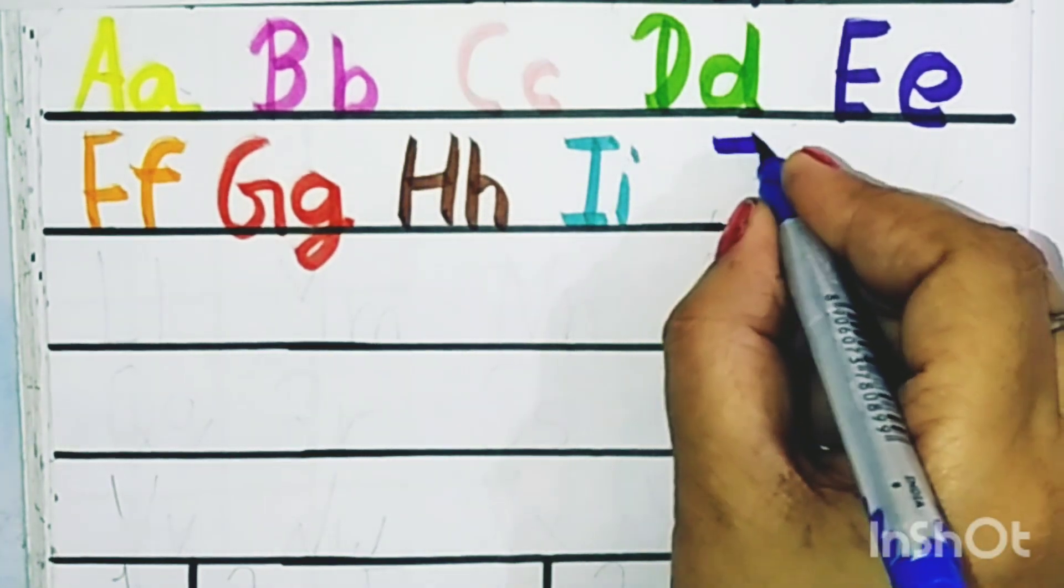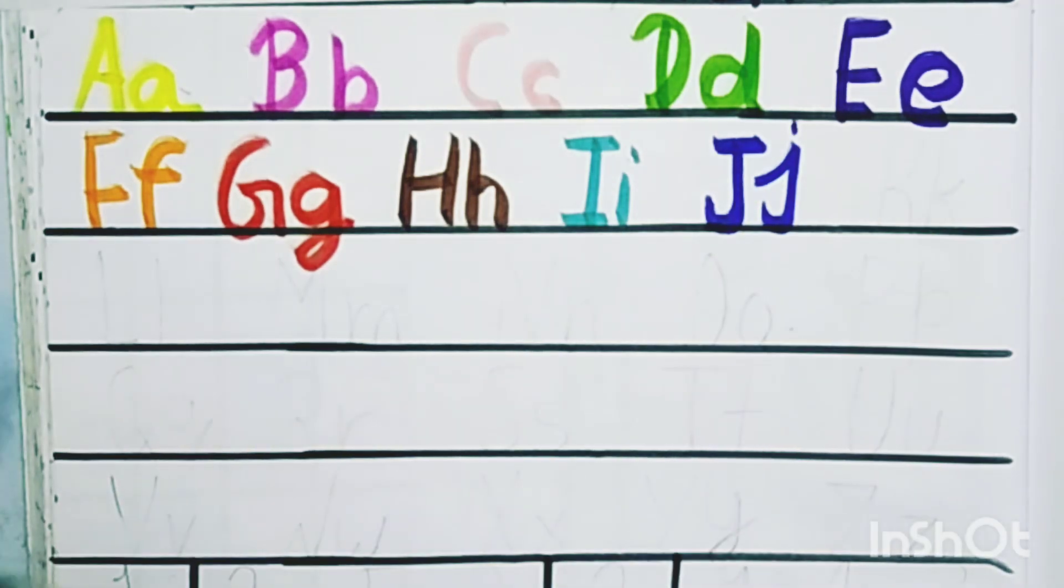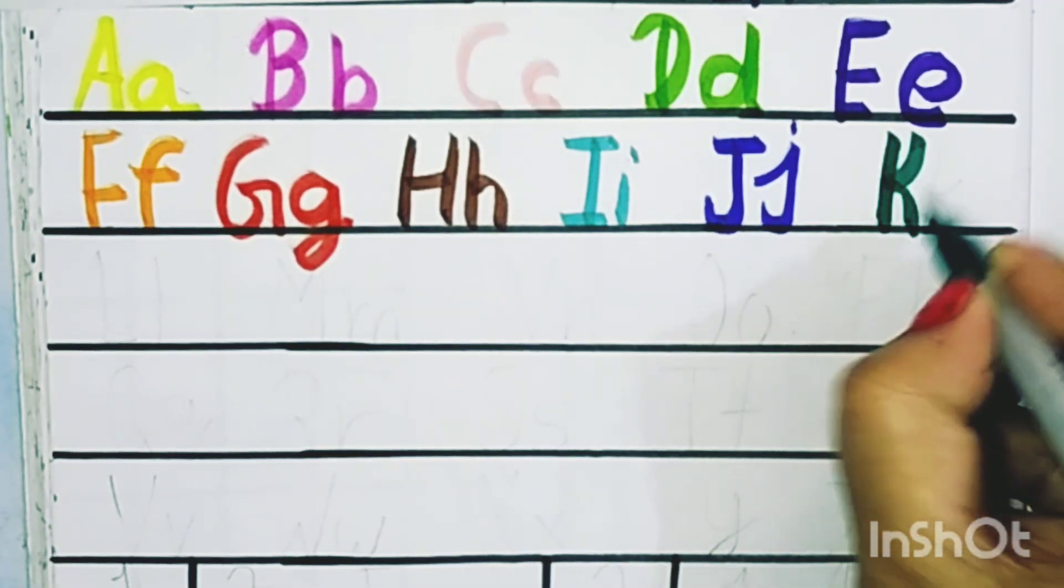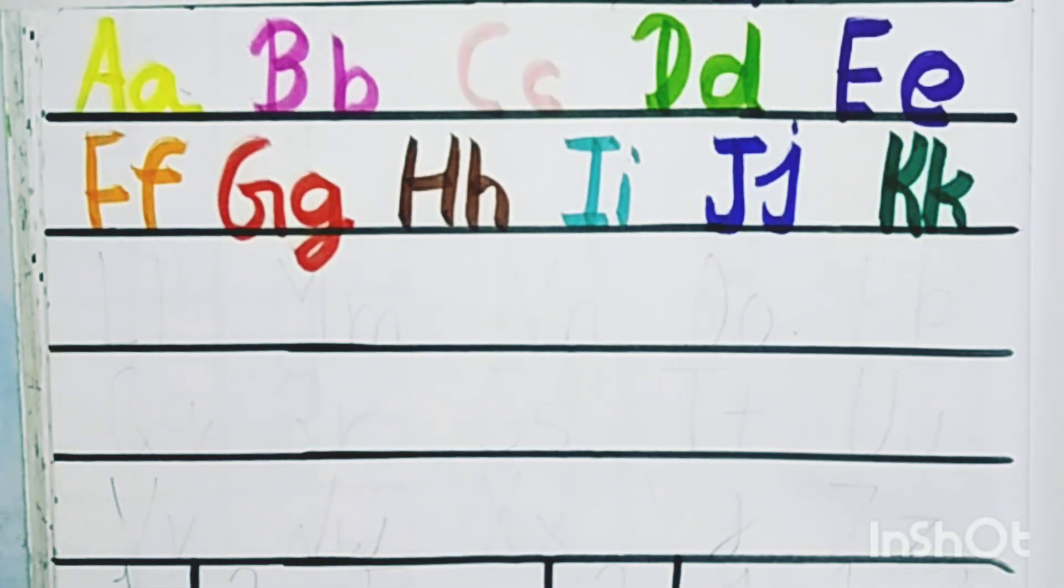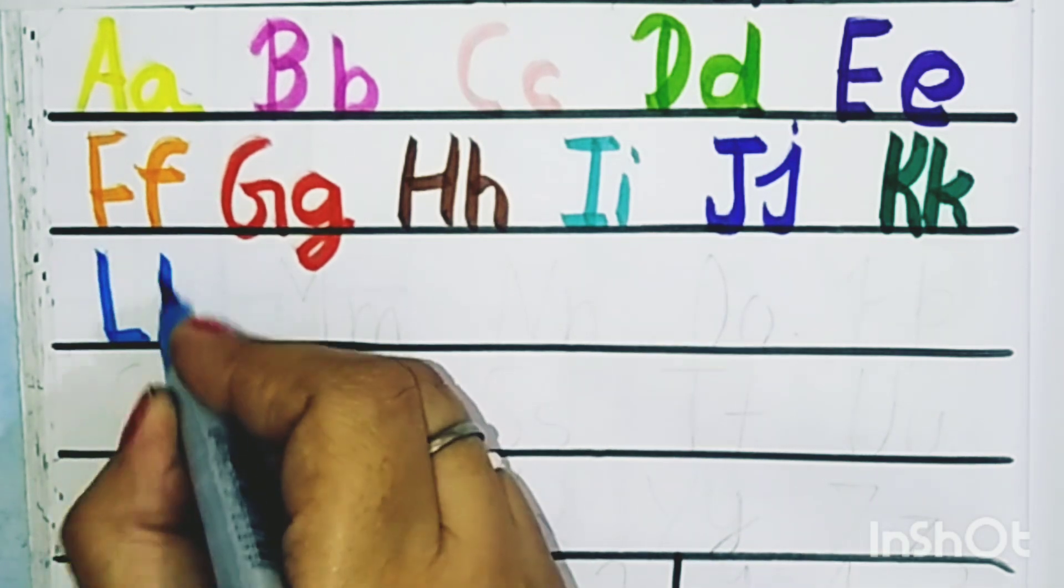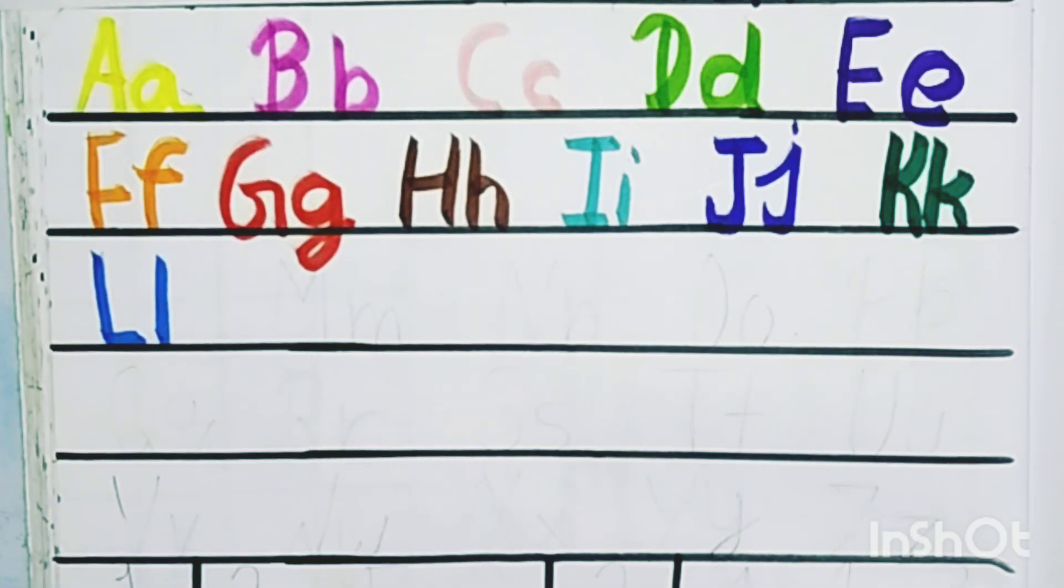J for jug, K for kite, L for lion, M for monkey.